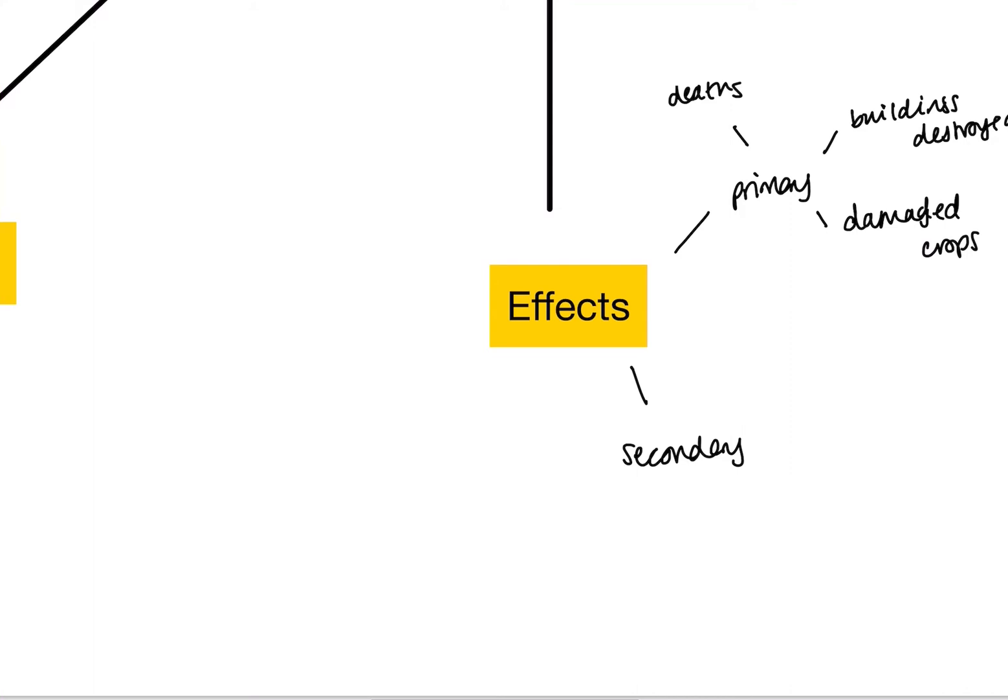If we flip that and start thinking about secondary, these are the things that often happen later. These are more of a consequence of our primary effects. That could be other hazards, for example after an earthquake we could get tsunamis. That could be things like disease from poor sanitation. That could be things like a weakened economy as a result of all of the damage to the infrastructure.